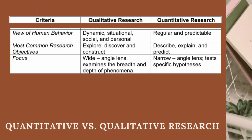View of human behavior: Qualitative research views human behavior as dynamic, situational, social, and personal. Quantitative research views human behavior as regular and predictable. Most common research objectives: Qualitative research objectives are to explore, discover, and construct. Quantitative research objectives are to describe, explain, and predict.